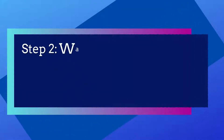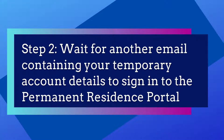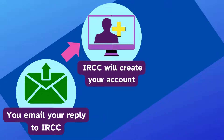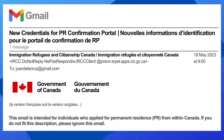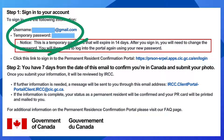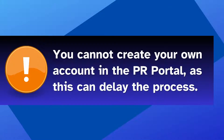Step 2: Wait for another email containing your temporary account details to sign in to the Permanent Residence Portal. After sending your reply, IRCC will create an account for you on the Permanent Residence Portal and send you another email. This email will contain your username and temporary password so you can sign in to the Permanent Residence Portal. Keep in mind that you cannot create your own account in the PR Portal, as this can delay the process.